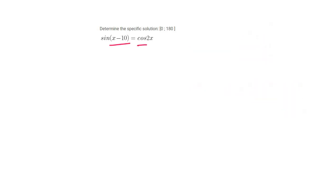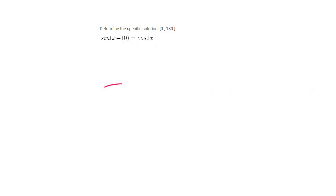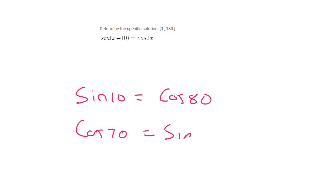When they are different, you need to remember to use co-functions. Co-functions are a property of sin and cos where, for example, sin 10 is the same as cos 80, cos 70 is the same as sin 20, and sin 5 is the same as cos 85. Sin and cos have this property that if the angles add up to 90 degrees, they are equal to each other.